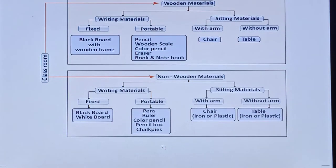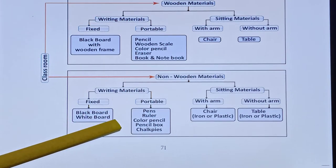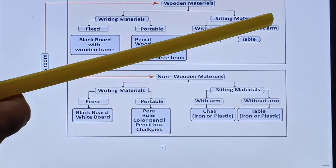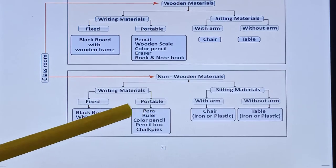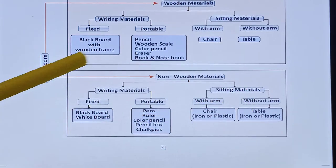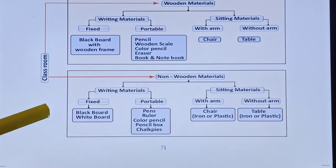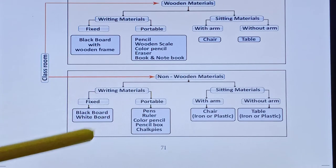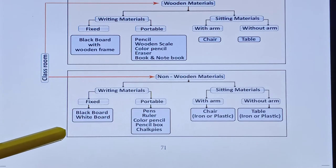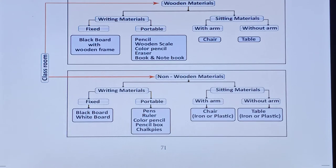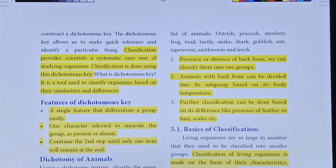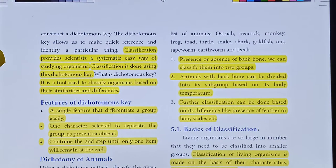There are similarities and differences among objects — wooden material and non-wooden material, writing material and sitting material. Organisms are placed under different headings. The method of classification is a scientific way of studying an organism.